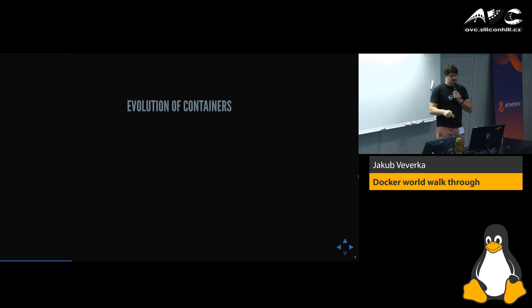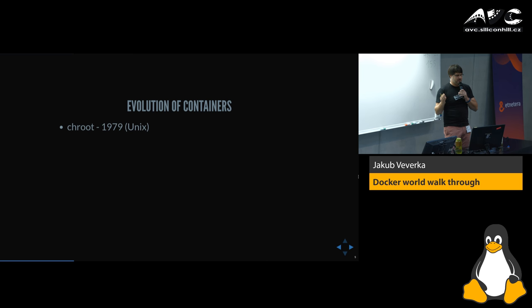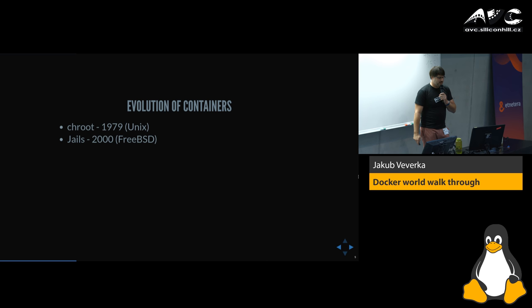Let's have a look at when it all started. In 1979 there were big Unix systems, and they thought it might be nice that if there is a process, for security reasons, processes shouldn't be able to see each other's files. So they created chroot. It's a pretty basic concept and this is exactly what is used by modern containers, in a fancier way. Then in FreeBSD they introduced jails, which builds on the chroot logic and added a few more features for putting the process into a jail.